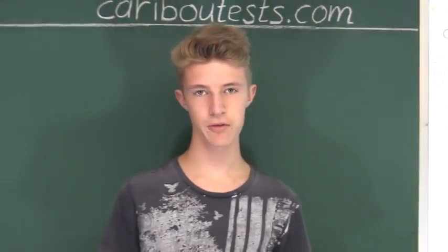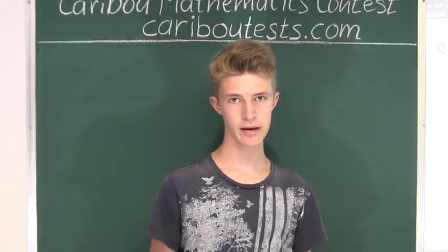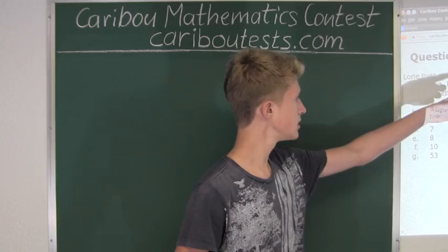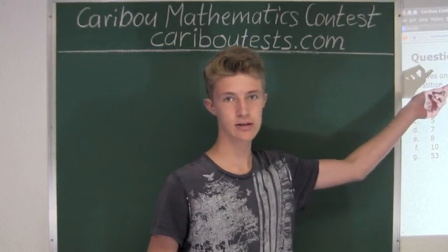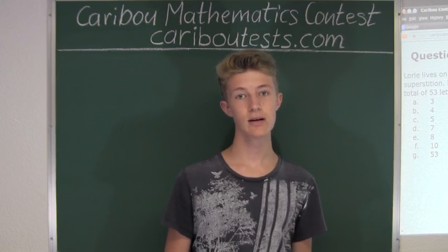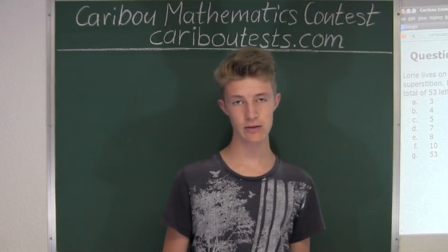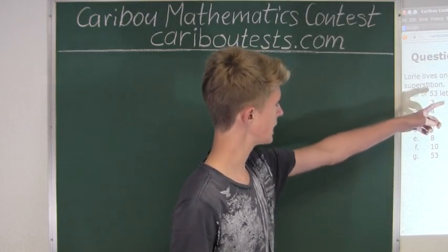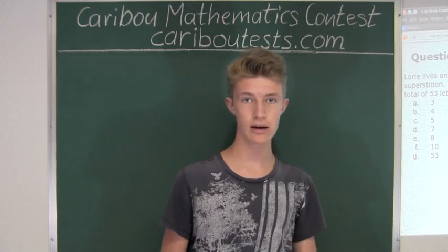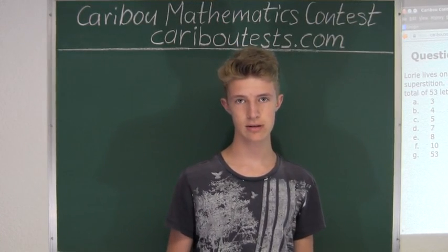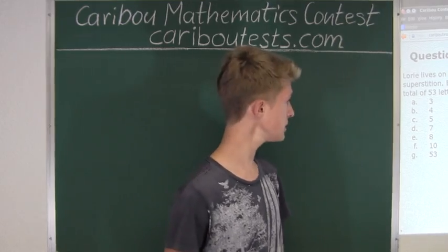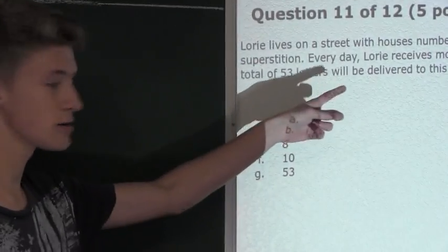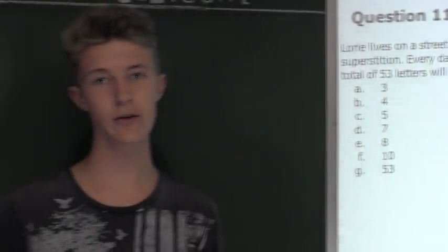We are given three facts in this question. The first fact is that there are 14 houses, or would be, but since there is no number 13, 14 minus 1 is 13 houses. Fact 2 is that Lori must receive more letters in the mail every day than any other house. Finally, fact 3 is that today there were a total of 53 letters delivered to the whole street.